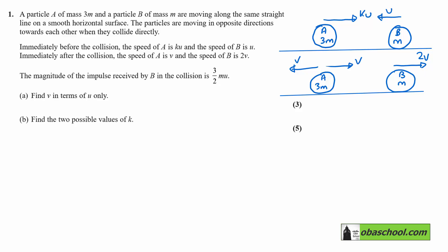The magnitude of the impulse received by B in the collision is 3/2 mu. In part A, we want to find V in terms of U only. So 3/2 mu equals—and remember, we only need to look at B.